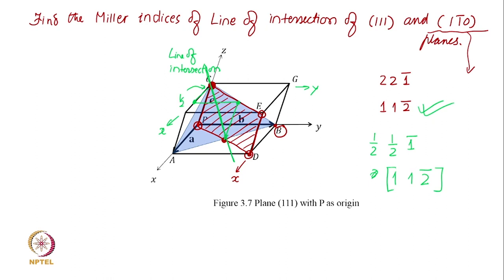If you choose, there was a possibility, although it is a face center one will not choose an origin on the face center, but if you choose the origin on the face center and decide to go that way, then you will get the negative of this, bar 1 bar 1 2. That is also an acceptable answer. It is only sense is different.